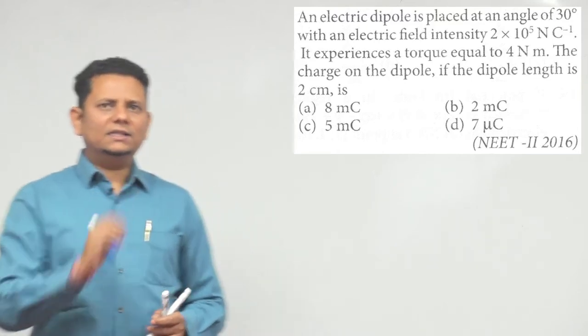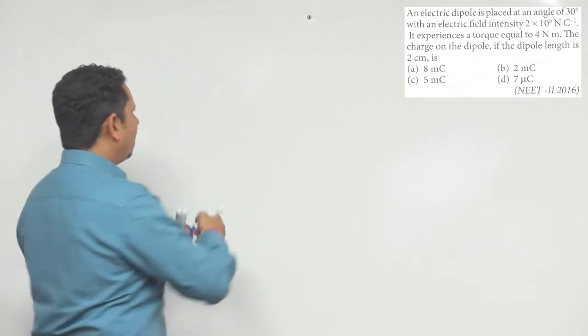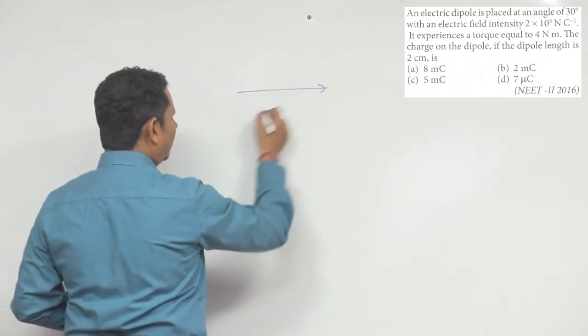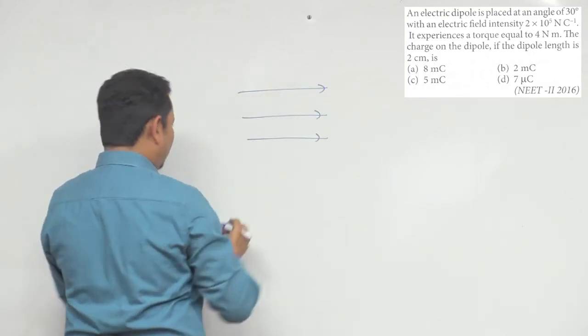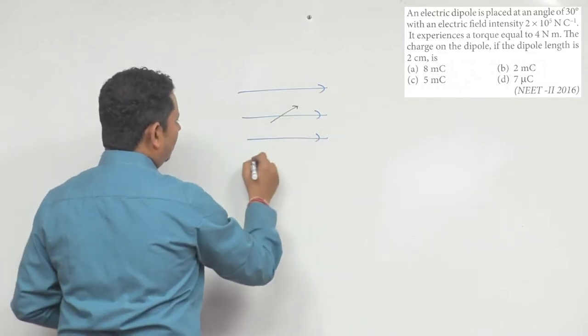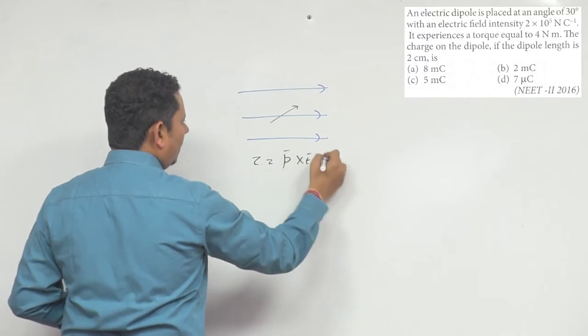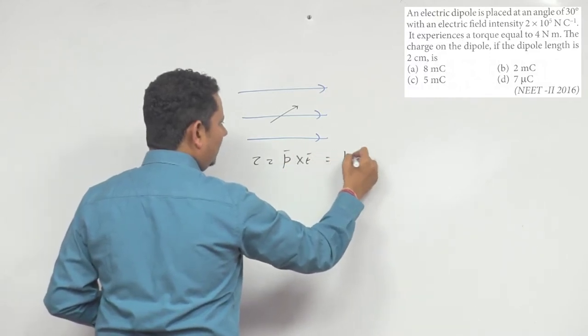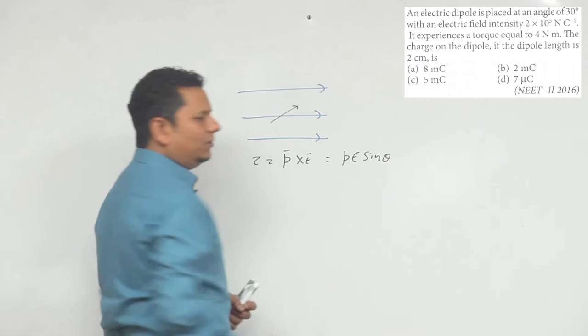Now this is a simple question. We know that if this is your electric field and you place the dipole at a 30-degree angle, then the torque is written as P cross E, which equals P E sin theta.